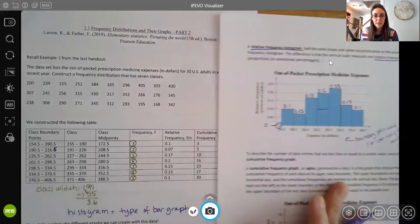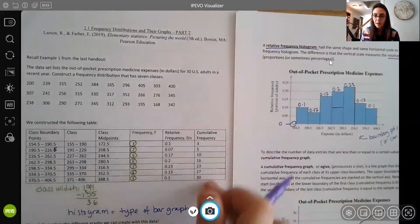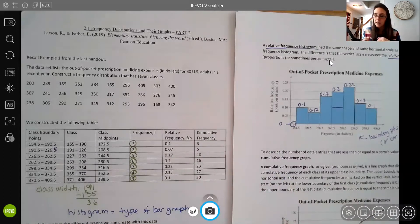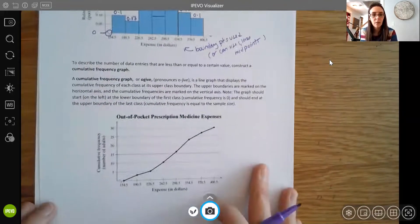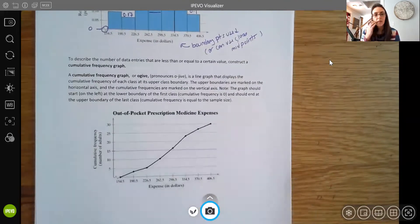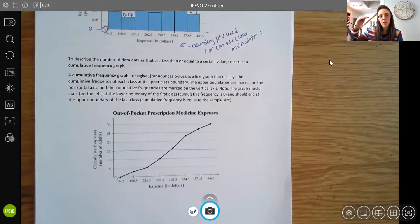We can also use our cumulative frequency. So we did that as well. Cumulative means to add. So we're adding up those frequencies as we go class by class. And we do have a graph for that too.